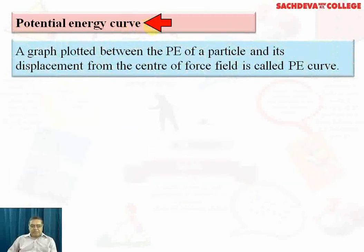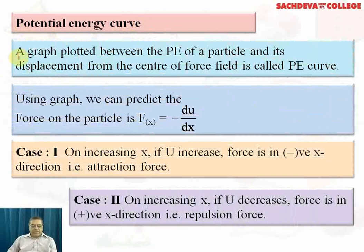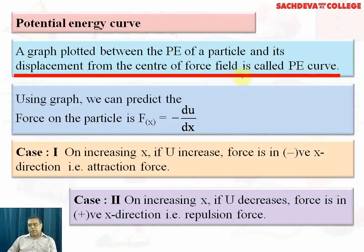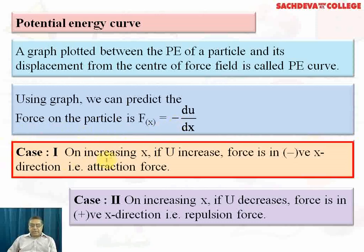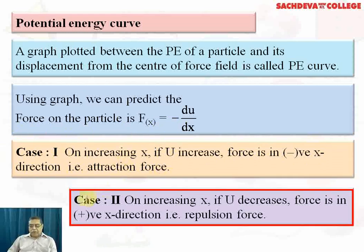A graph plotted between the potential energy of a particle and its displacement from the center of force is called the potential energy curve. Using this graph, we can predict the force on the particle: F(x) = −dU/dx. In case one, if U increases as x increases, the force is in the negative x-direction (attractive). In case two, if U decreases as x increases, the force is in the positive x-direction (repulsive).